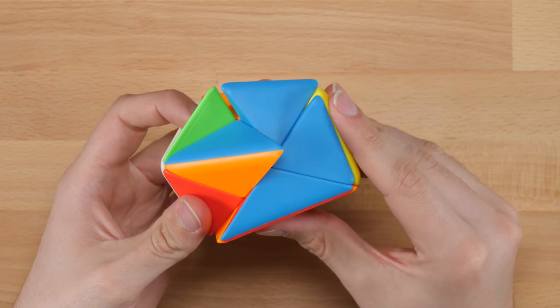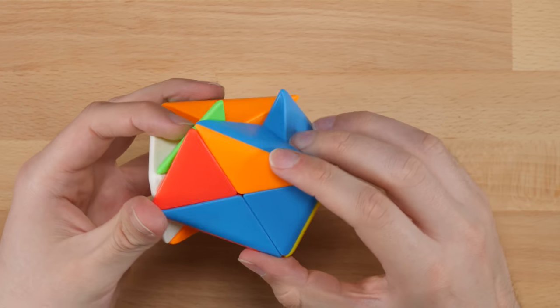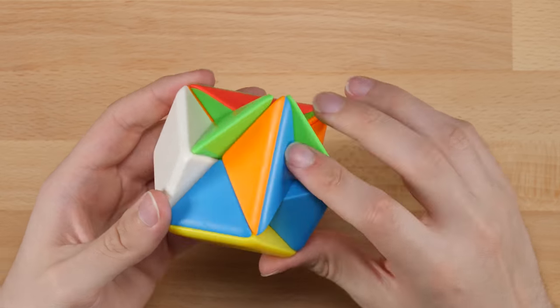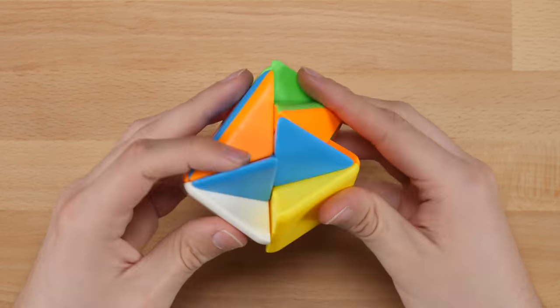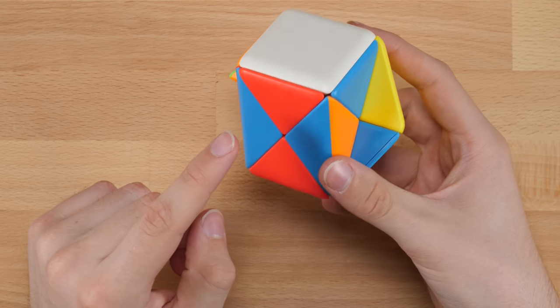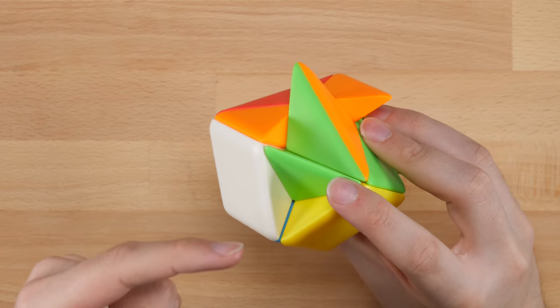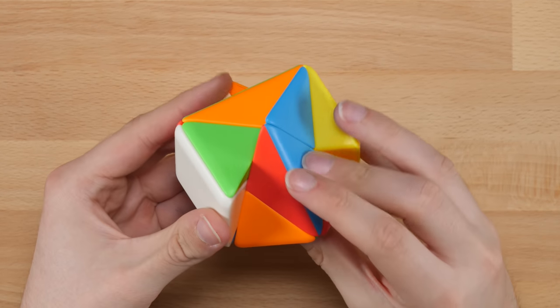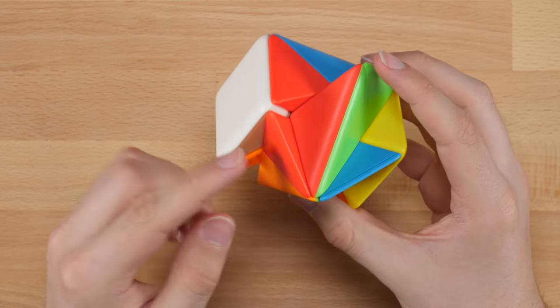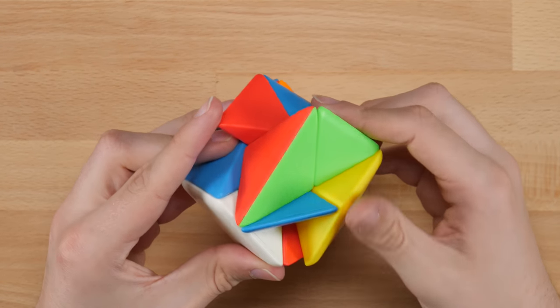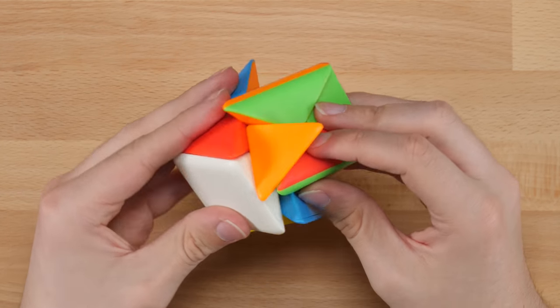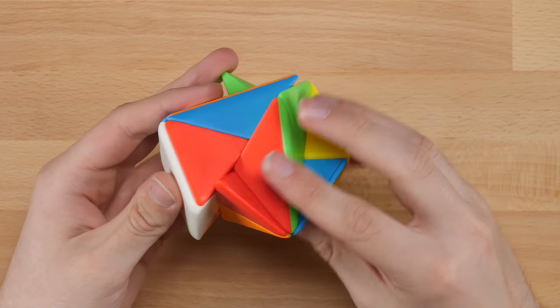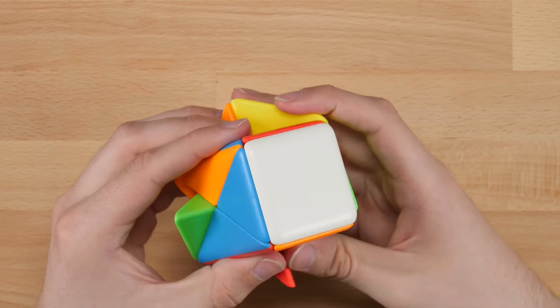I guess we're about to find out because we need a blue piece right here. So let's see, how do we rotate this? There we go. So now we need orange here. There we go. And then green here. Let's see. Okay, there we go.